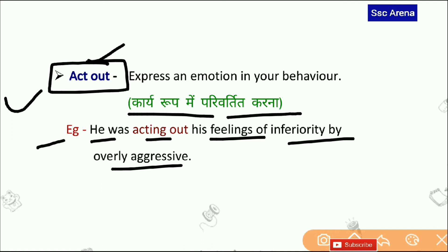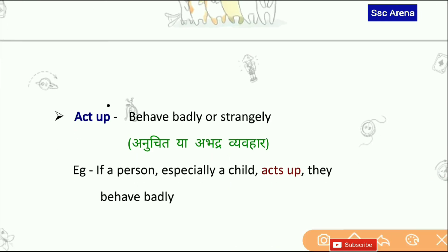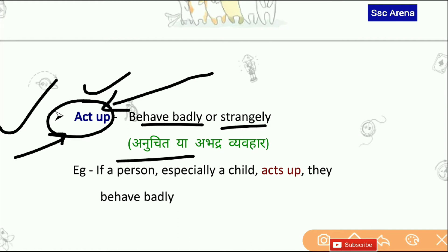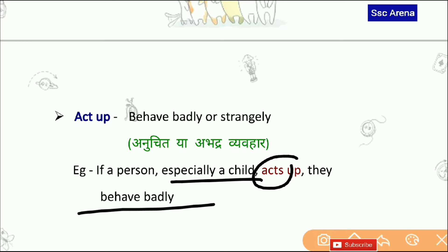अपने जो inferiority था उसको Act Out कर रहा था feelings को बहुत ज़्यादा aggressive होकर। Next है हमारा — Act Up. Act Up का मतलब होता है Behave Badly and Strangely — normally जैसा व्यवहार आप करते हैं उससे हट कर अगर आप different करते हैं तो उसे बोलते हैं Act Up। यह exam में आता है और CGL में पूछा जा चुका है। Act Up का मतलब होता है अनुचित या अभद्र व्यवहार। If a person, especially a child, Acts Up, they behave badly।